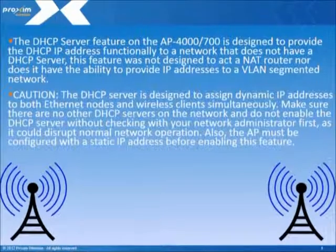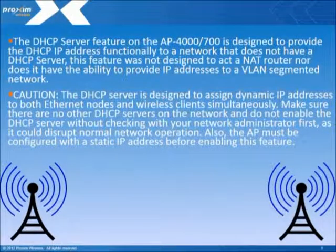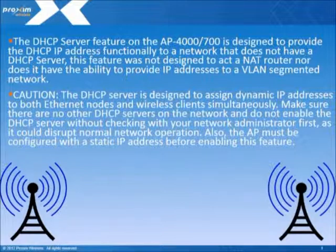The DHCP server feature in the AP4700 is designed to provide DHCP IP address functionality to a network that does not have a DHCP server. This feature was not designed to act as a NAT router, nor does it have the ability to provide IP addressing to a VLAN segmented network.